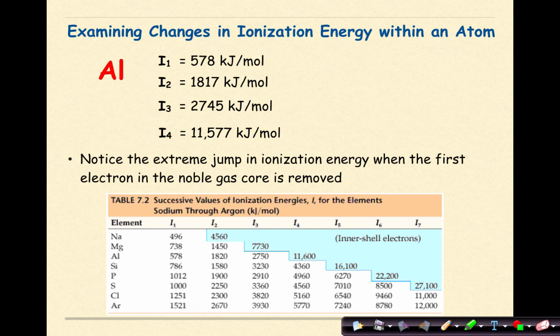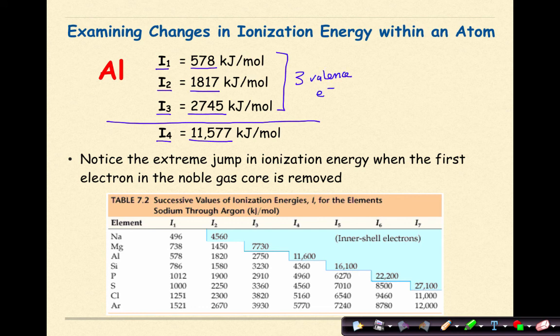Examining changes in ionization energy within an atom. Aluminum has a first ionization energy of 578, a second of 1817, a third of 2745, and a fourth of 11,577. There's a pretty big jump between these three ionization energies and this fourth one. Because remember, these three ionization energies represent our three valence electrons. You can pretty much predict how many valence electrons an element is going to have just by looking at ionization energies. As soon as you see a relatively big jump, at that point you know that you've gotten into your core electrons.